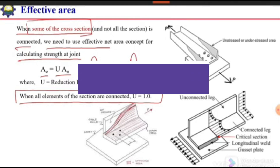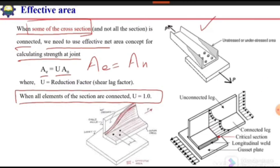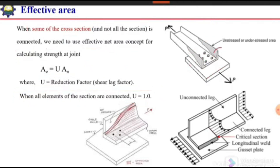The question is: why do we need to reduce this net area? If we see this figure, we have a channel section but only the web of this channel is connected with the plate. At the critical section, the flanges of this channel section will not be stressed 100 percent — they will be either partially stressed or unstressed. So the only area resisting the applied load is the web area, and the shaded area will not be effective to resist the applied load.